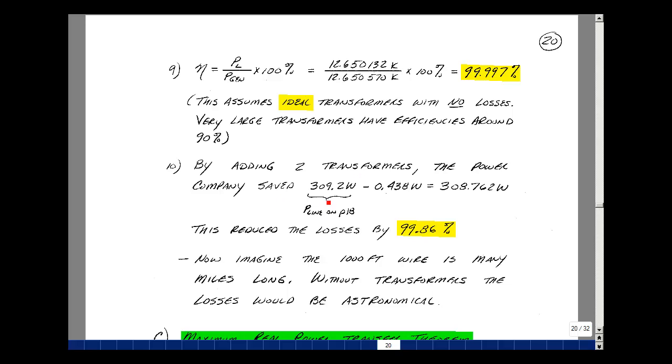So in this particular case, by adding two transformers, we're able to cut our power losses by 99.86%. We had 309 watts before, and now it's dropped to 438 milliwatts. That's just an example with 1,000 feet of wire. Suppose you had several miles of wire. The savings would be astronomical.